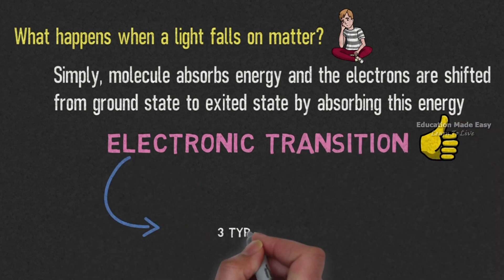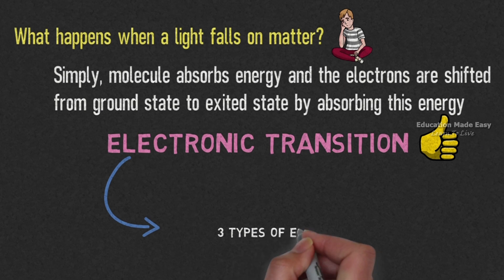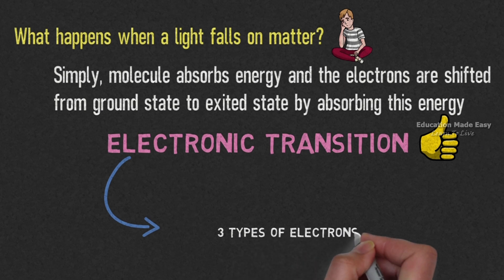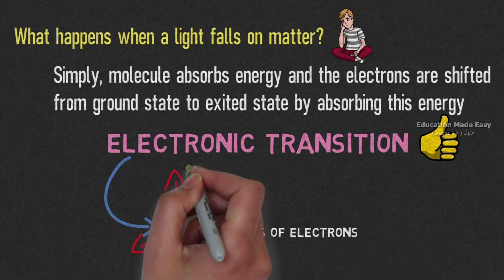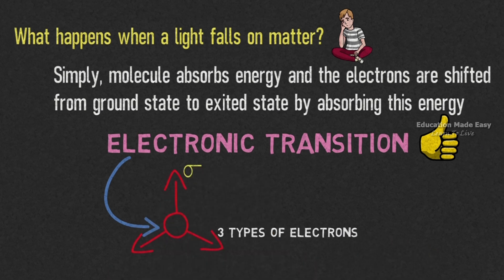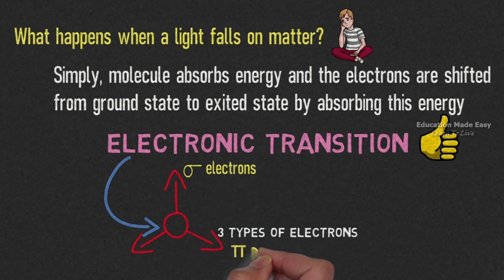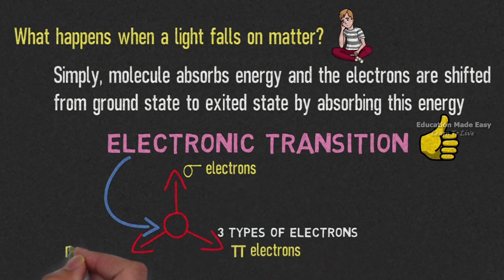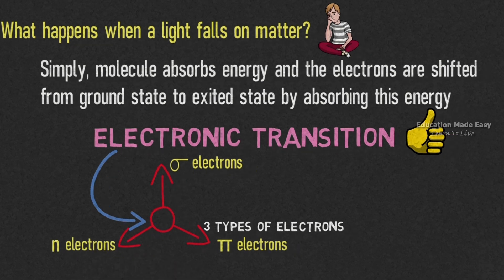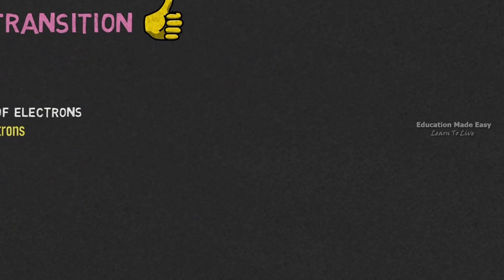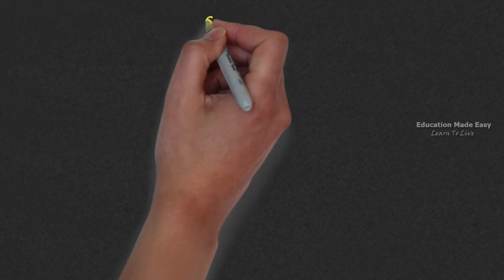Electronic transitions are caused by three types of electrons: sigma electrons, pi electrons, and n electrons. Let us learn about each of these electrons in brief.